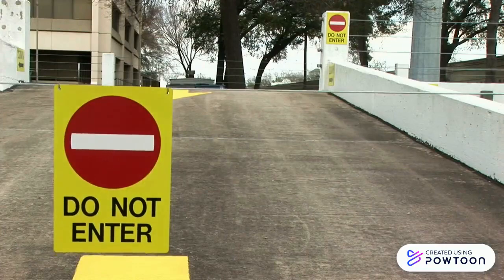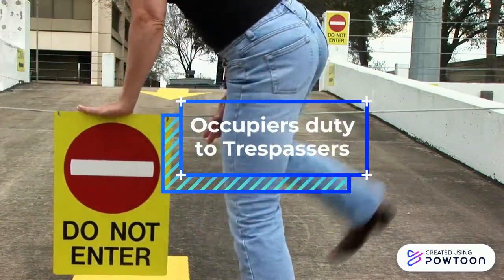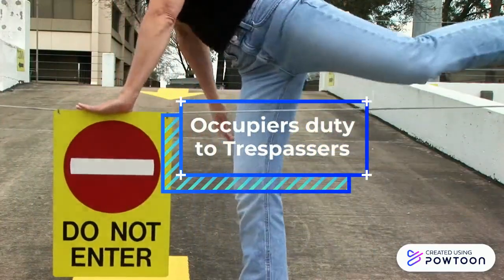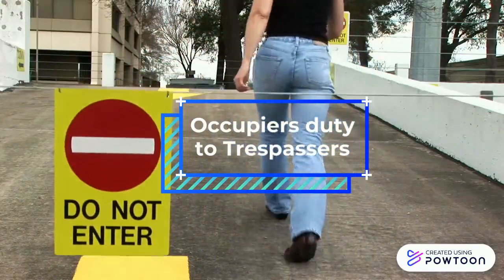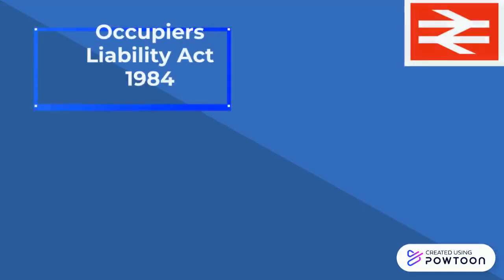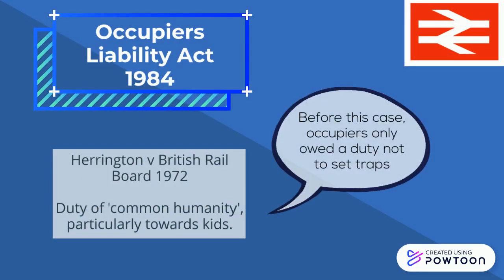The Occupier's Liability Act 1984 surrounds unlawful visitors. Before this act, trespassers had very little in the way of protection — an occupier only owed them a duty of common humanity.